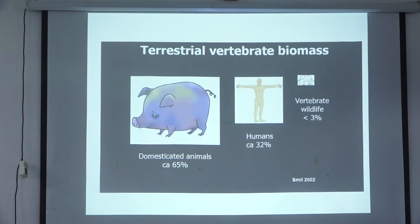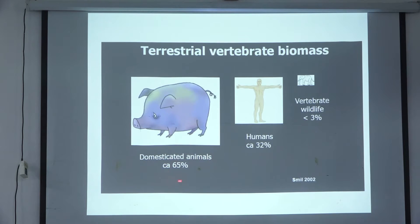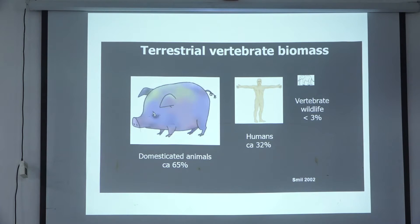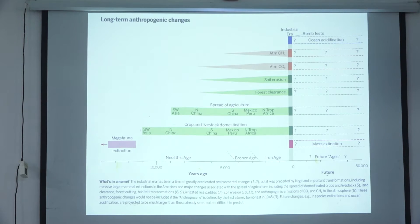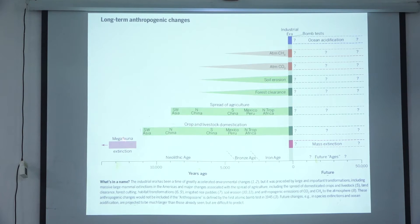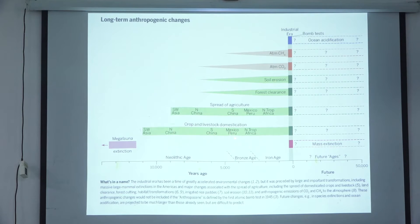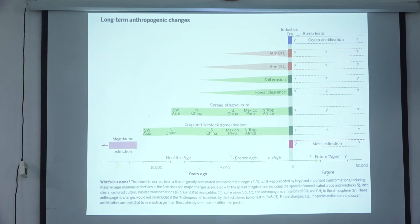Our terrestrial vertebrate biomass: domesticated animals 65%, humans 32%, vertebrate wildlife only 3%. This summarizes the long-term anthropogenic changes — from the natural megafaunal extinction just before or at the beginning of the Holocene, through crop and livestock domestication in Southwest Asia, North China, South China, Mexico, and Peru, to the spread of agriculture, forest clearance, soil erosion, atmospheric CO₂, CH₄, ocean acidification, and then the bomb tests that came in 1945.